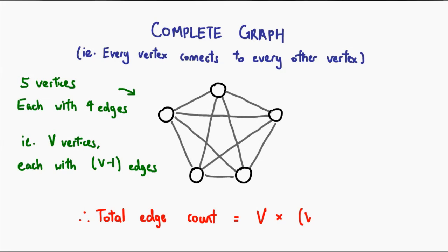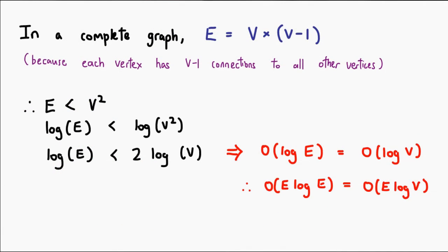because it will try to connect to every other vertex out there. There's a maximum number of edges, we cannot have more than that, which is why we can actually say E is less than V². So this gives us a relation between V and E.